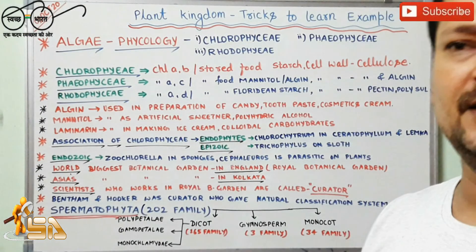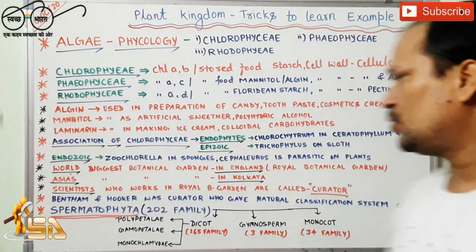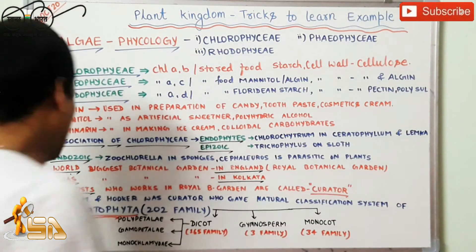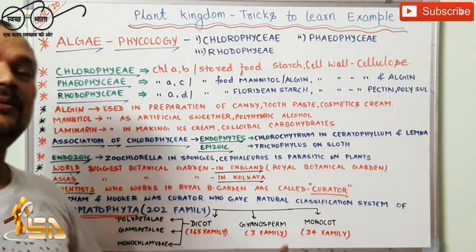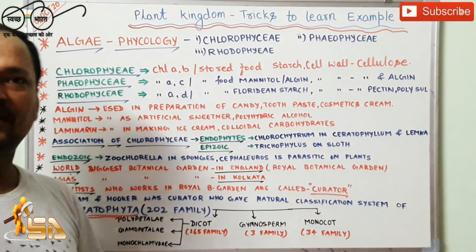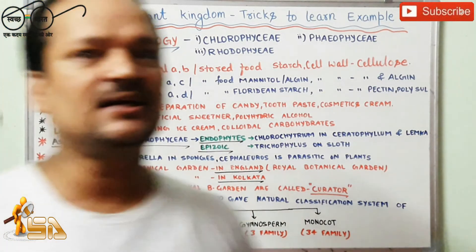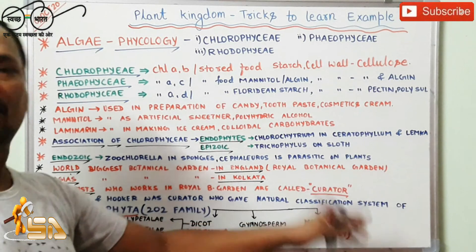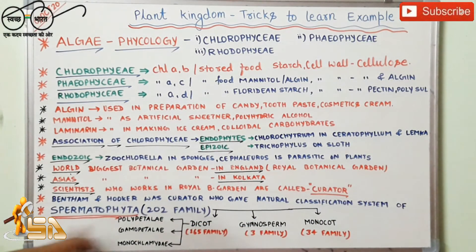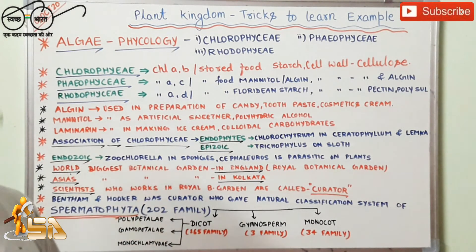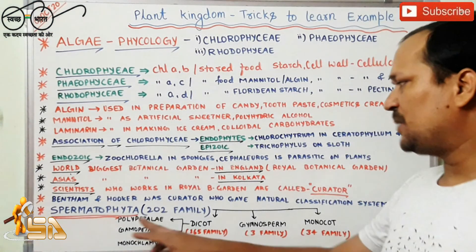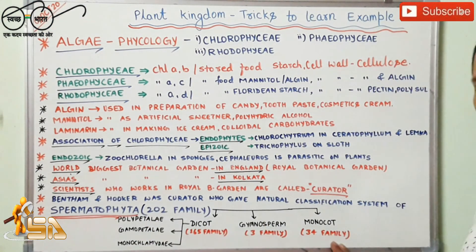The Royal Botanical Garden is located in England, and those who work there are called curators. If you are interested in the artificial classification system, Bentham and Hooker — George Bentham and Joseph Hooker — both were curators who worked in the Botanical Garden in England. Their classification of Spermatophyta grouped 202 families into different divisions, classified as dicot, gymnosperm, and monocot plants.